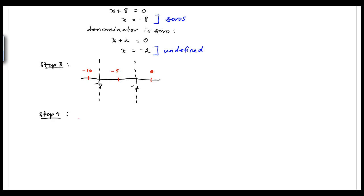Starting with x = −10: (−10 + 8) / (−10 + 2) = −2 / −8 = positive 1/4. Since 1/4 is greater than zero, all values to the left of −8 are positive.